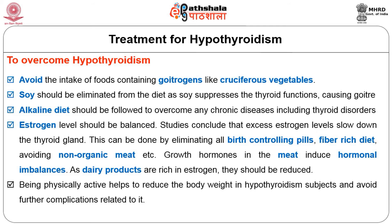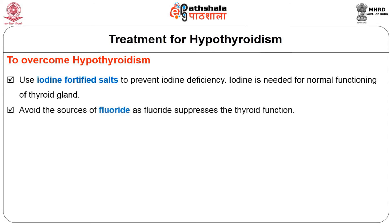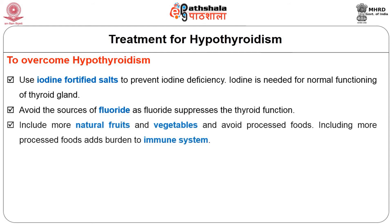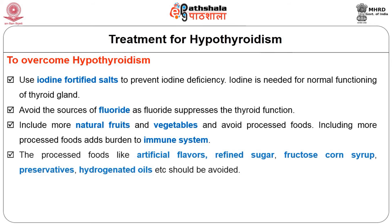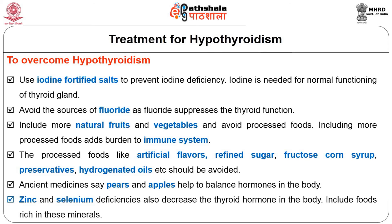Being physically active helps to reduce body weight in hypothyroidism subjects and avoid further complications. Use iodine-fortified salt to prevent iodine deficiency. Avoid sources of fluoride, as fluoride suppresses thyroid function. Include more natural fruits and vegetables and avoid processed foods such as artificial flavors, refined sugars, fructose and corn syrup, preservatives, and hydrogenated oils. Ancient medicine says that pear and apple help to balance hormones in the body. Zinc and selenium deficiencies also decrease thyroid hormone, so include foods rich in these minerals.